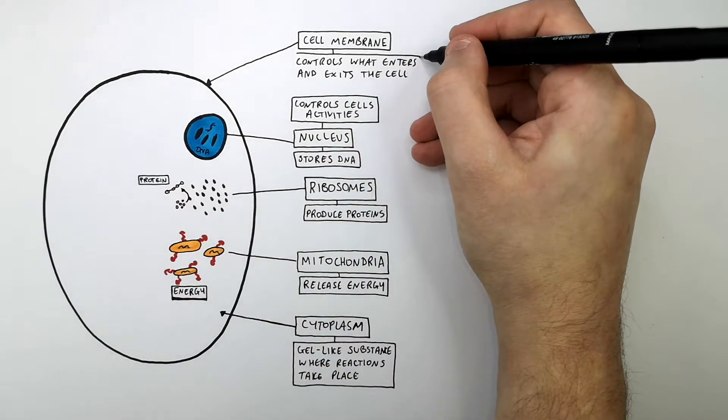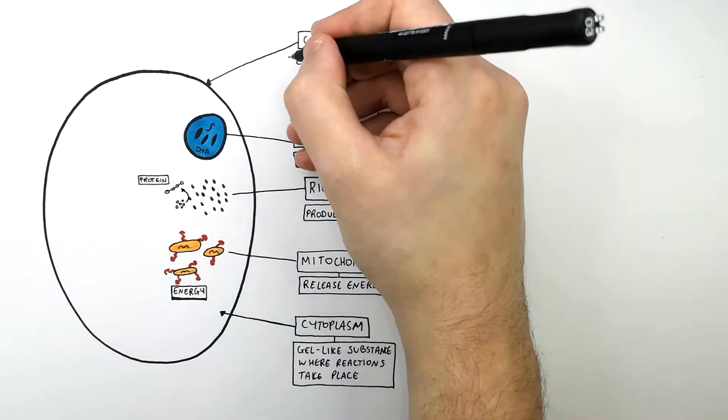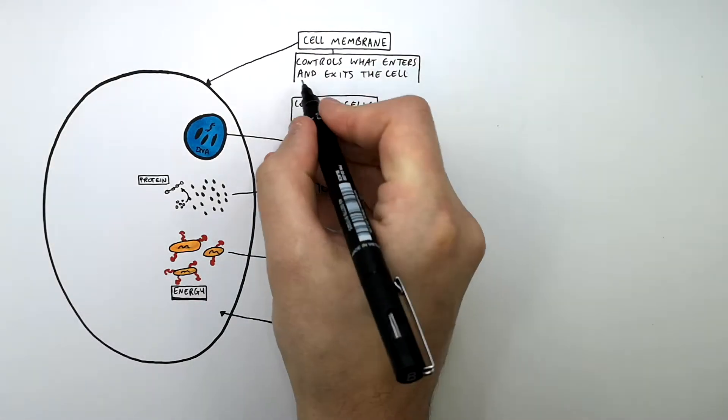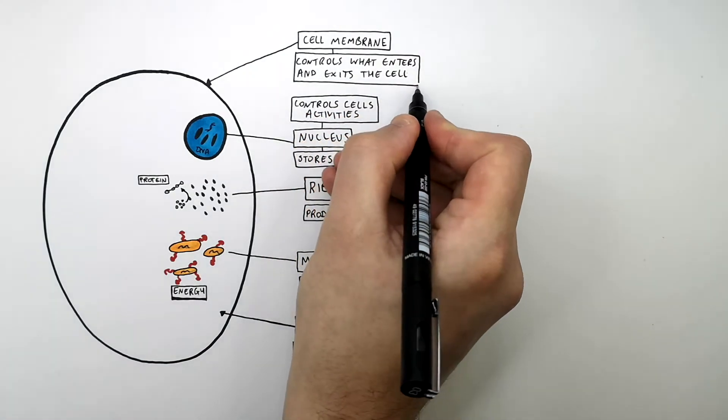So substances like oxygen, glucose, and other molecules that the cell needs can enter and exit through the cell membrane.